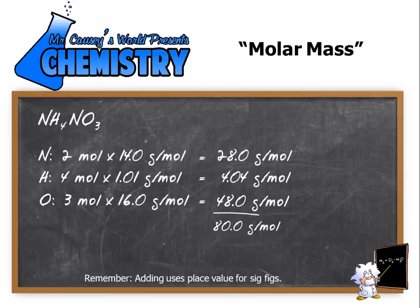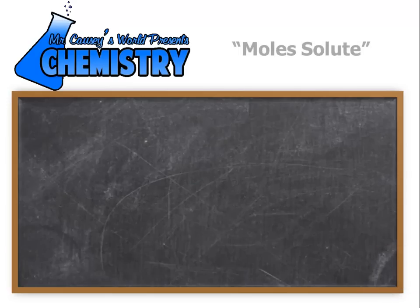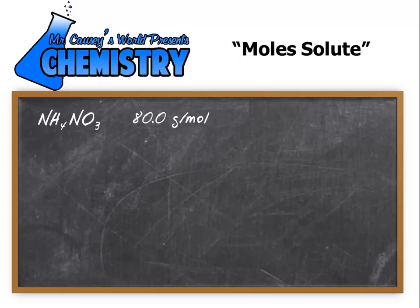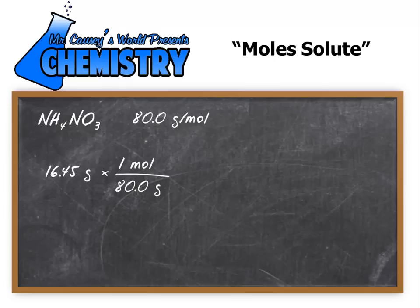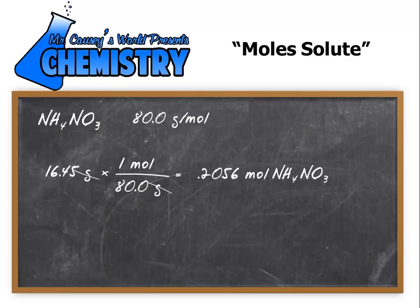I'm going to use 3 significant figures, or to the tenths place. For moles of solute: ammonium nitrate has a molar mass of 80.0 grams per mole. We take 16.45 grams and multiply by the conversion of 1 mole per 80 grams — grams cancel out, which is where unit analysis or dimensional analysis is useful. This gives us 0.2056 moles of ammonium nitrate. I'm not going to round to sig figs yet, because that would introduce error before the final calculation.